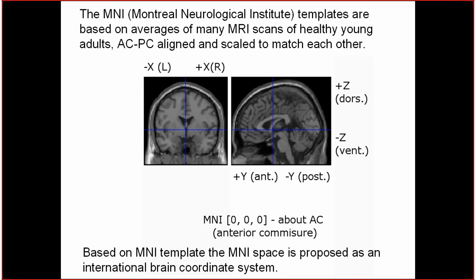There are three coordinates for every point of your image. The first coordinate, X, is the left-right direction: on the left it is a negative value, on the right from the midline it is a positive value, and zero is in the middle. The Y coordinate can also be positive and negative, and it represents the sagittal direction.